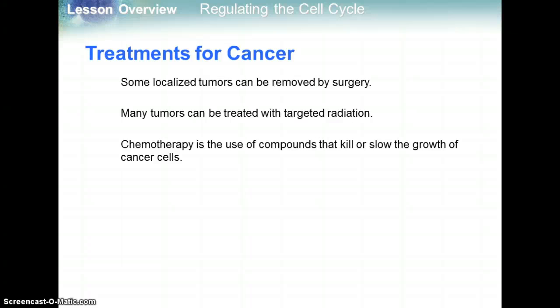Treatments for cancer: some localized tumors that haven't spread can be removed by surgery. Many tumors can be treated with targeted radiation to kill rapidly dividing cells. Chemotherapy uses compounds to kill or slow the growth of cancer cells. Chemotherapy and radiation target any cell that grows rapidly — that's why you lose your hair when undergoing chemotherapy or radiation, because hair cells are rapidly growing and get accidentally targeted since they sort of mimic the same characteristics as cancer cells.